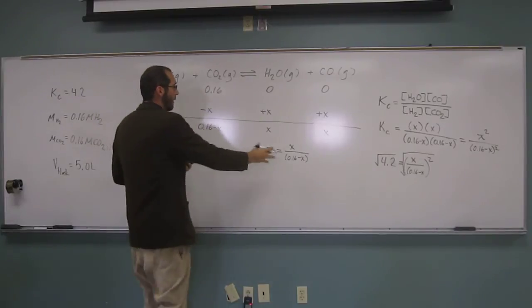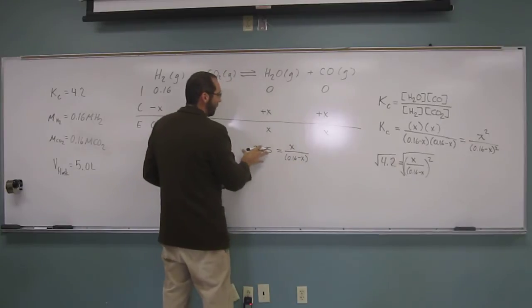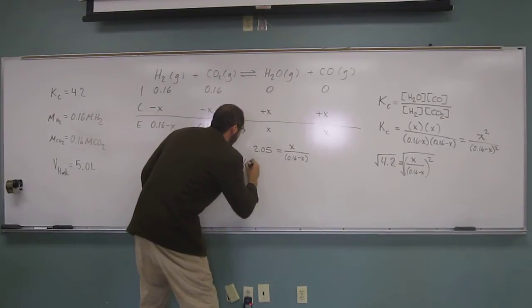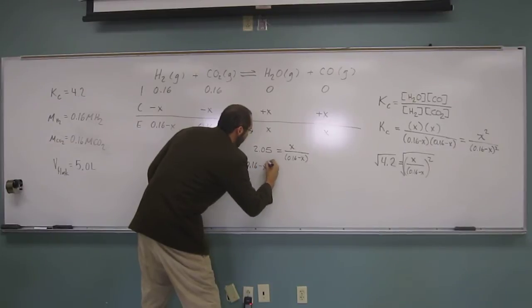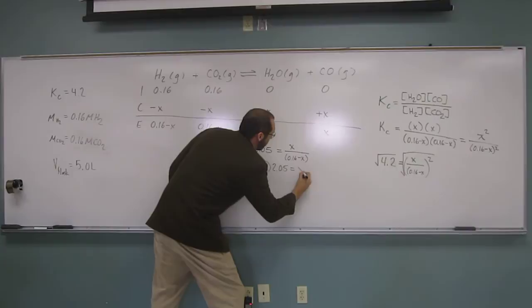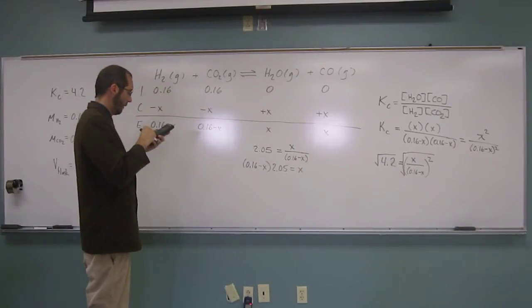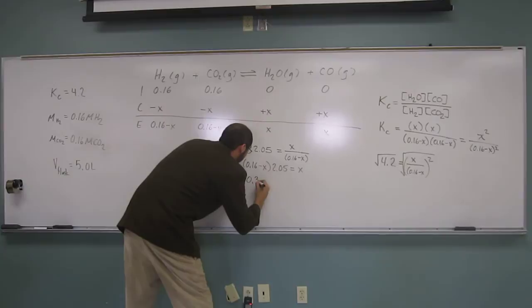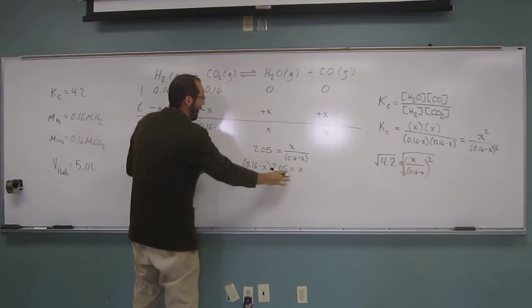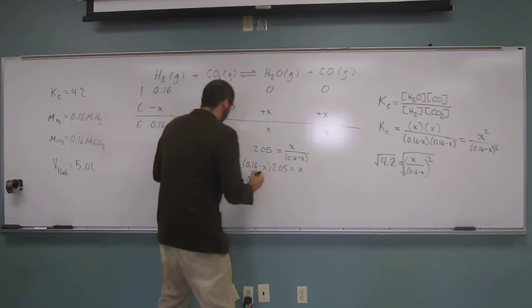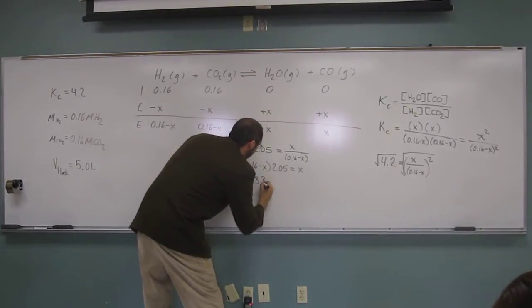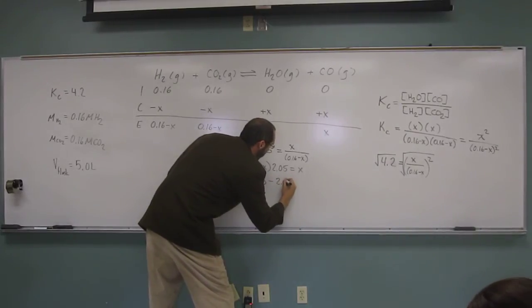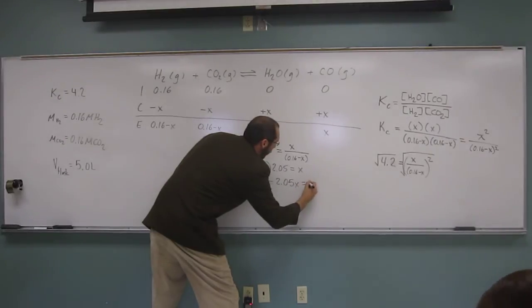So now let's try to isolate x. So how do we do that? Multiply both sides by 0.16 minus x, so times 2.05 equals x, like that. So let's multiply that by 2.05 times 0.16, so that's going to be 0.3. So we'll reduce this now, finally,